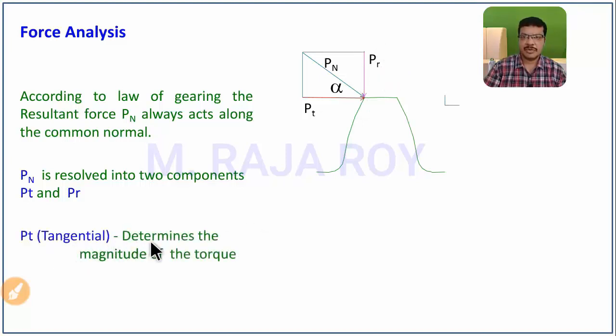Pt is the tangential component. This tangential component determines the magnitude of the torque. Whatever amount of torque you want to transmit is decided by the Pt value. From torque, you get power: power equals 2πNmT/60.